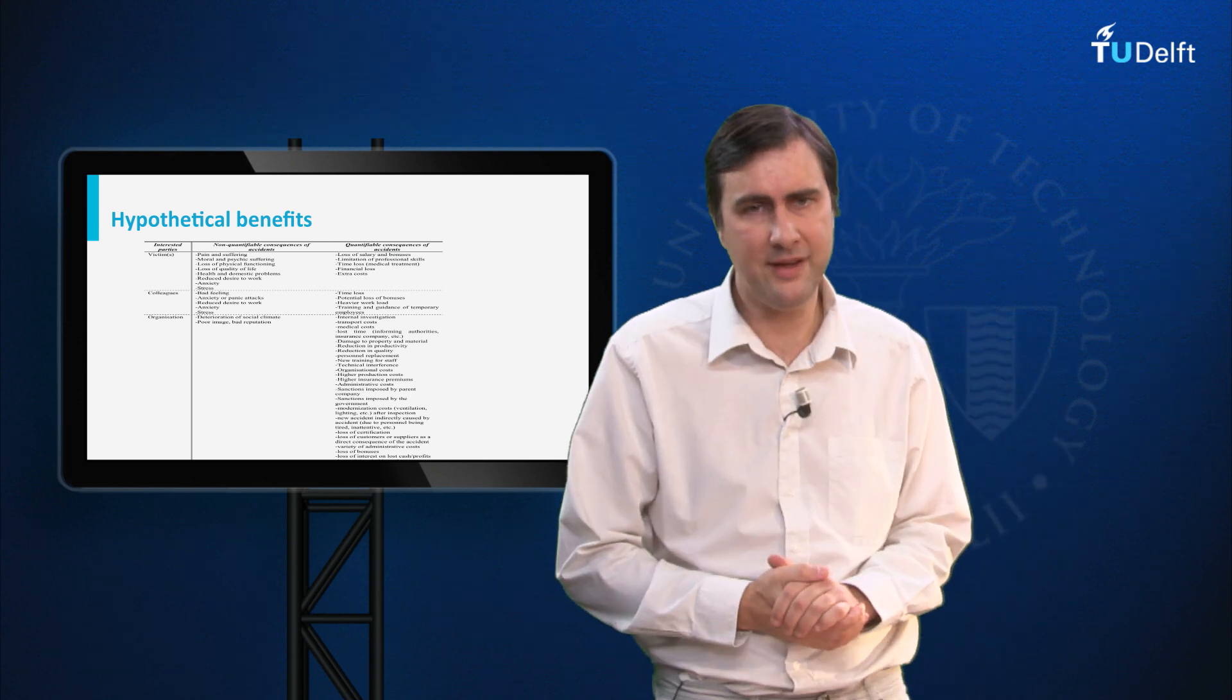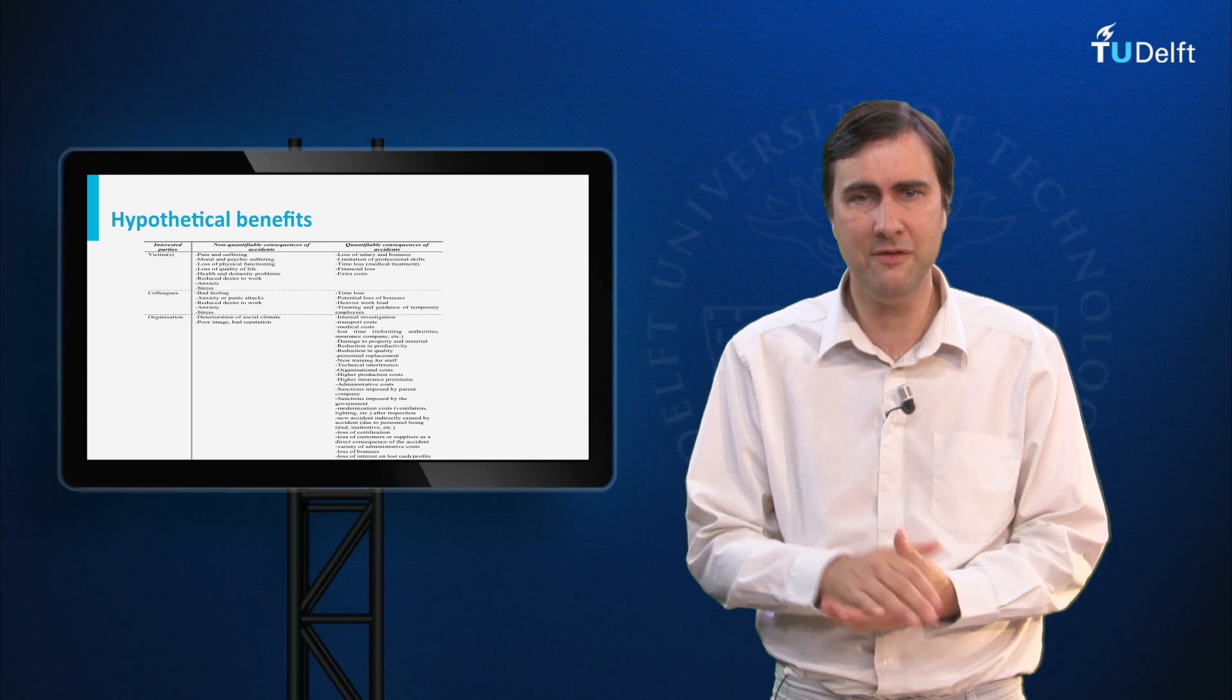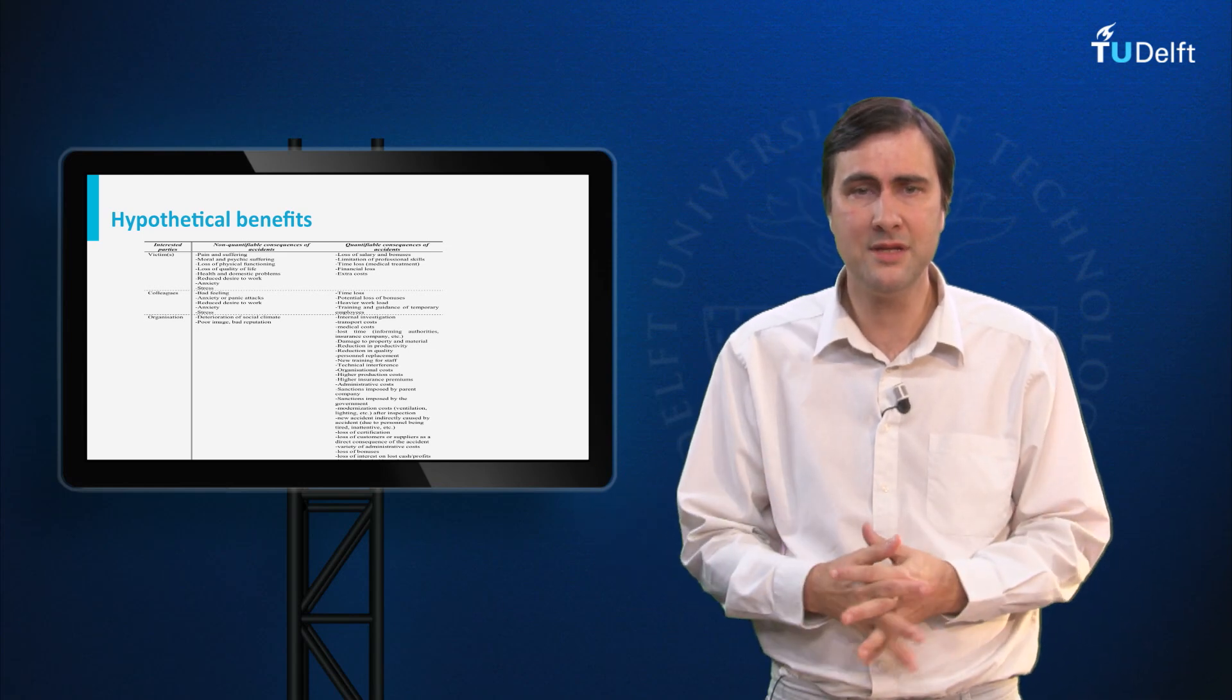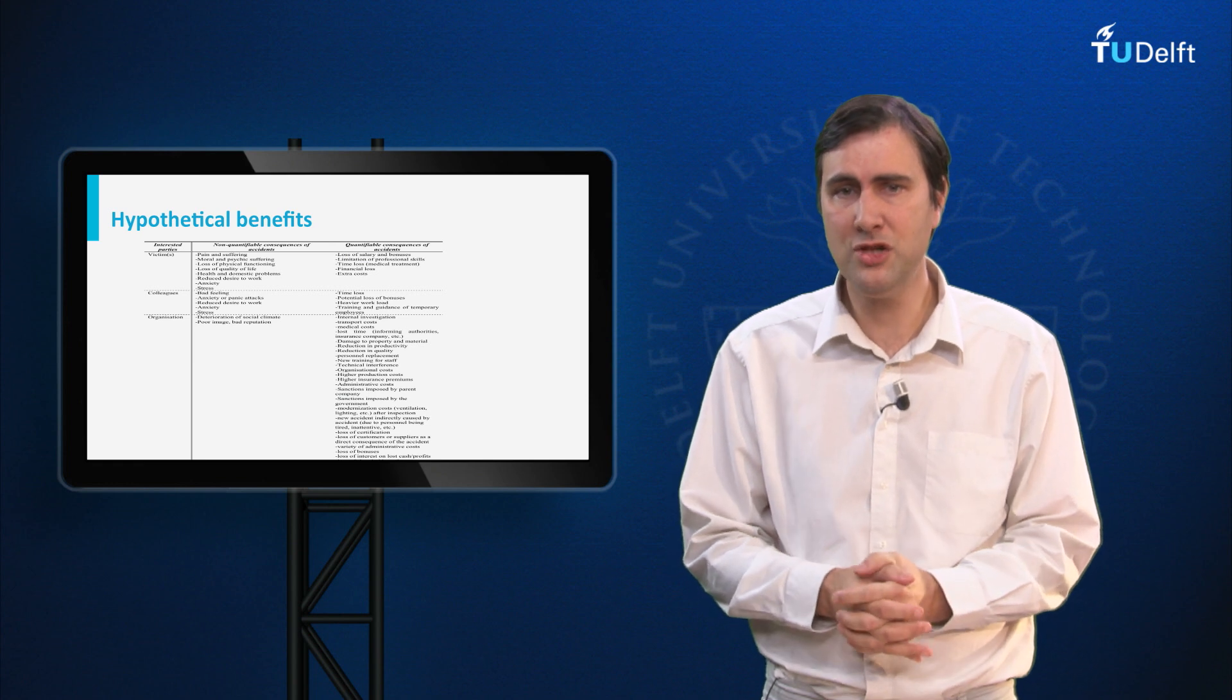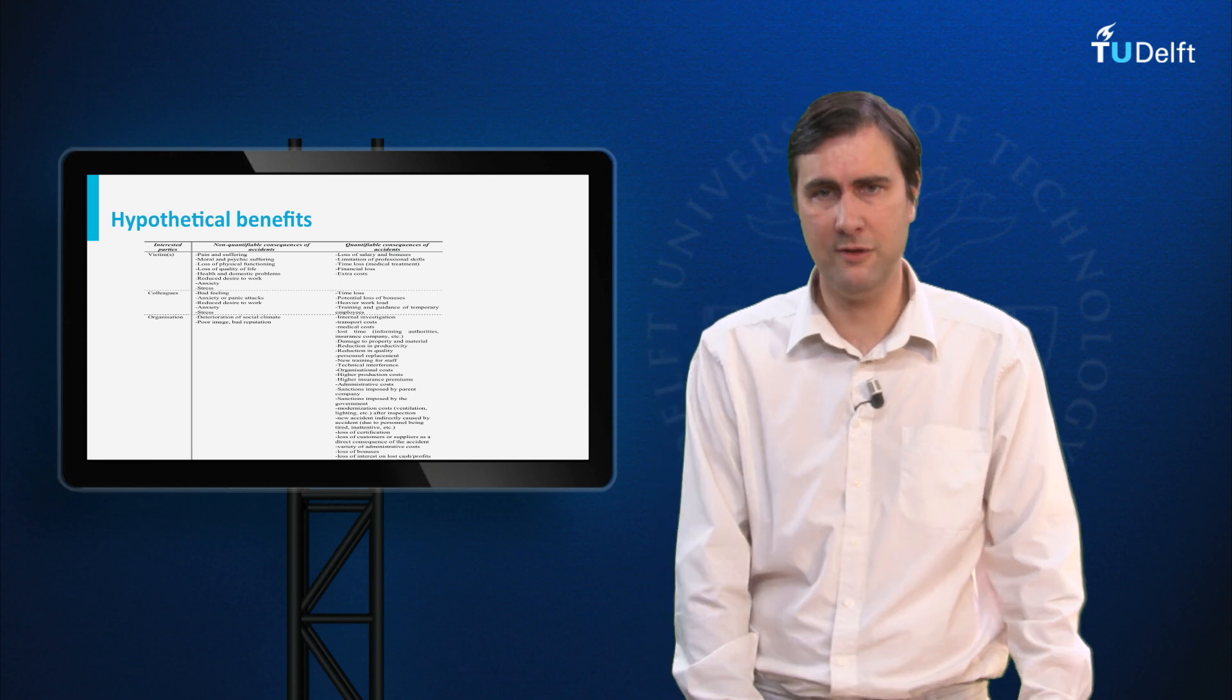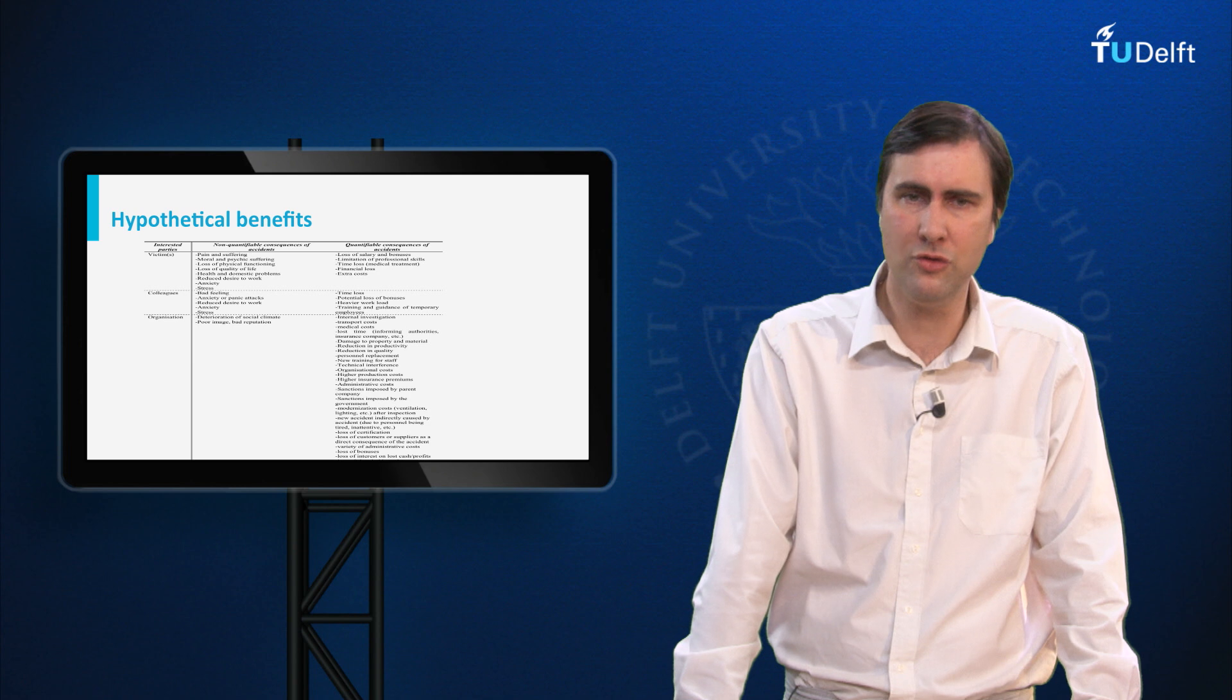Hypothetical benefits or avoided accident costs can be diverse such as supply chain benefits, damage benefits, legal benefits, insurance benefits, human and environmental benefits, intervention benefits, reputation benefits and other benefits. The benefits represent positive cash flows, which all occur in the future and thus will have to be discounted to the present.